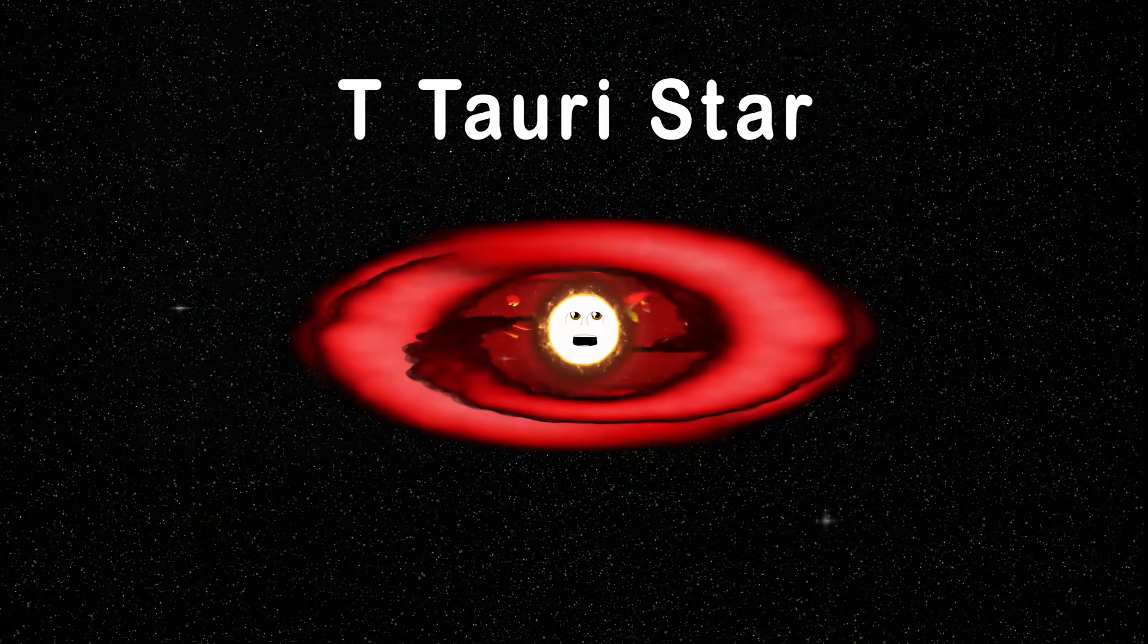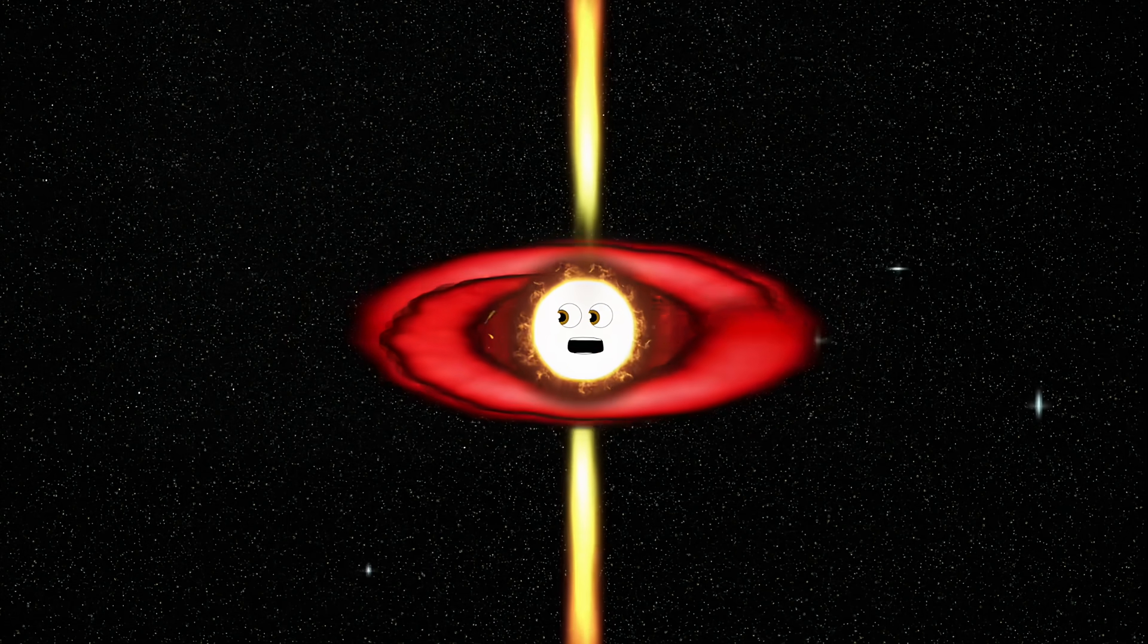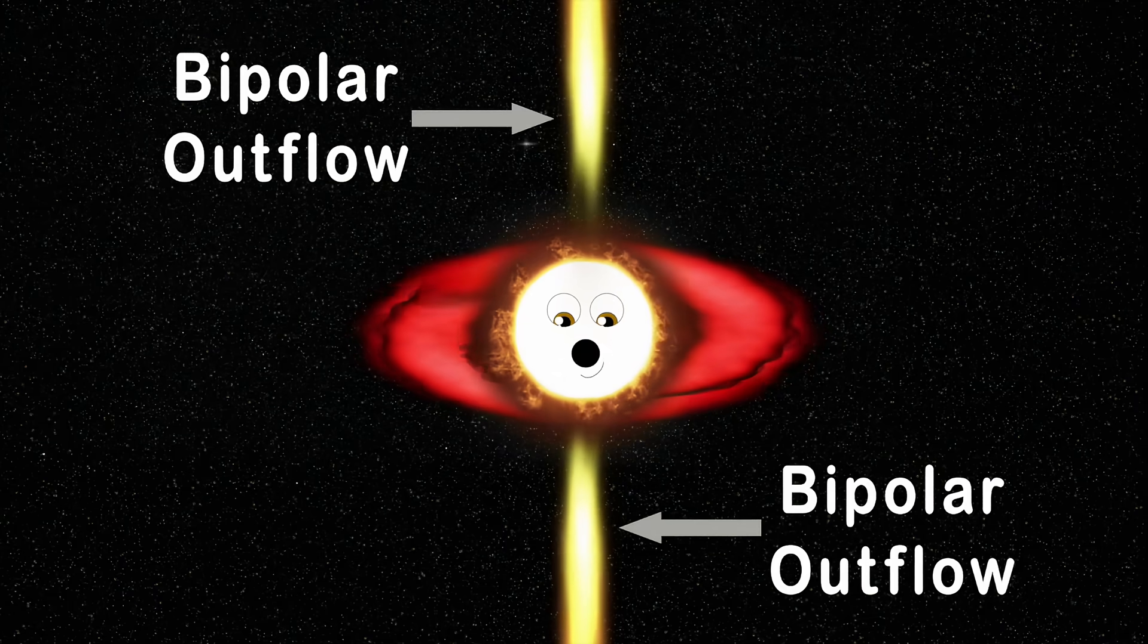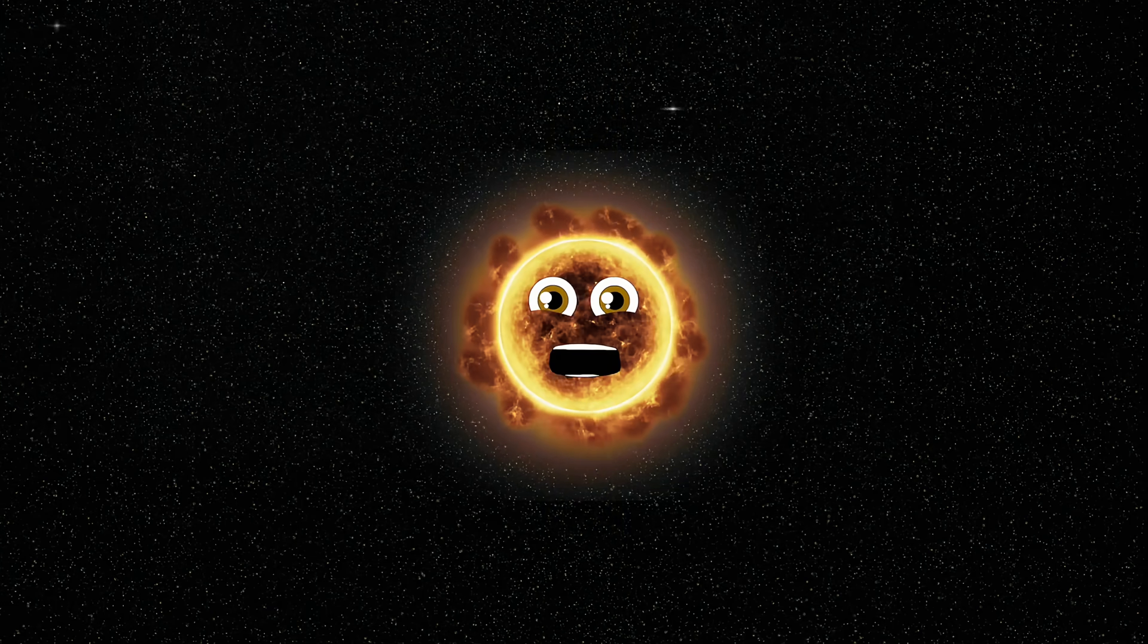I'm a T Tauri star now, also a pre-main sequence star. My job's to clear away the dust and gas and send it really far. My stellar winds create bipolar outflows that decrease my mass. Till I'm a main sequence star, my center burning nuclear gas.